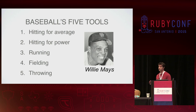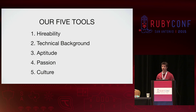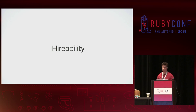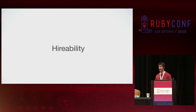Remember the five tools of baseball? These are the five tools of the Flatiron School: hireability, technical background, aptitude, passion, and culture. Before anyone has written a line of code, this is what we're looking for. Hireability: our school is designed for a very specific outcome. When I say a successful student, I'm talking about a student that can go from no experience to employable in a really short period of time — getting their first job at a high starting salary, being promoted quickly, with employers giving us positive feedback on them.